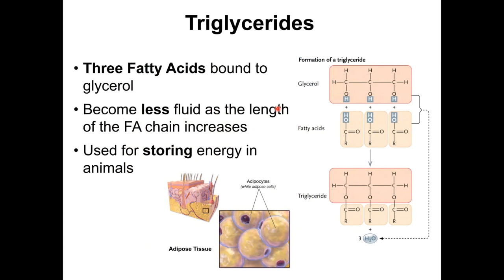Triglycerides are very important molecules for energy storage. They are found in fat tissue, which is made by adipocytes or fat cells — cells that are essentially a huge vesicle containing fatty acids, with only a tiny space taken by the nucleus. The rest is all fatty acid, found under the dermis and in different areas of the body. Triglycerides are made by glycerol esterified with three fatty acids, which can be of different types — saturated, cis unsaturated, or if your diet introduces them, trans unsaturated.